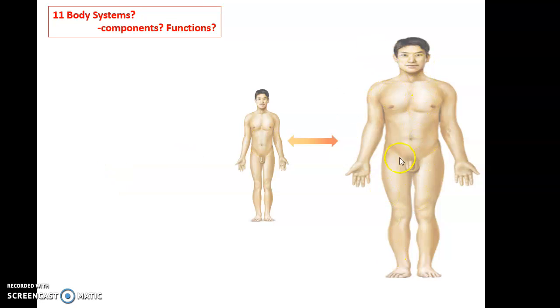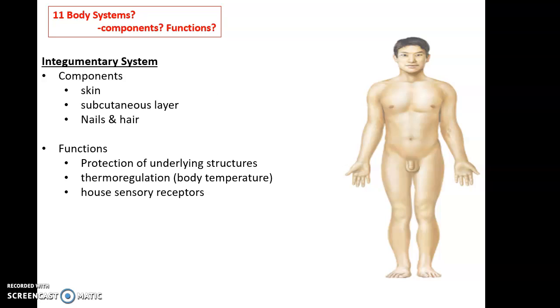Then we have this lovely system. What do we see here? It's the integumentary system. The integumentary system includes the skin, which is our largest organ, the subcutaneous layer directly below the skin, and the hair and nails.